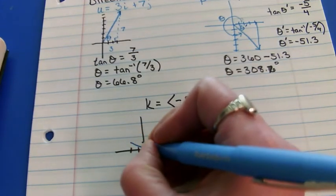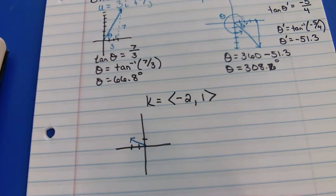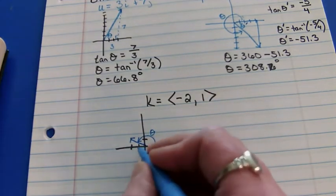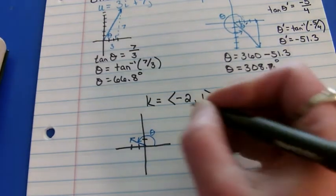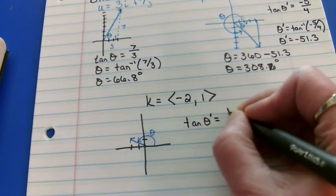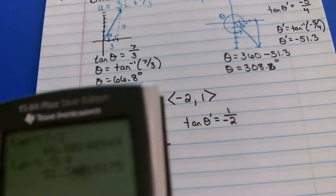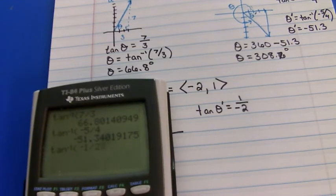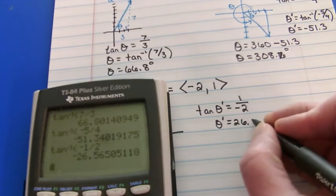Here's this one. What angle do we really want? We want this one. But the angle we're going to find is going to be this little one. So, tangent of the reference angle is going to be the vertical component divided by the horizontal component. So, I'm going to be doing inverse tangent of negative 1.5. And I get that the reference angle is 26.6.